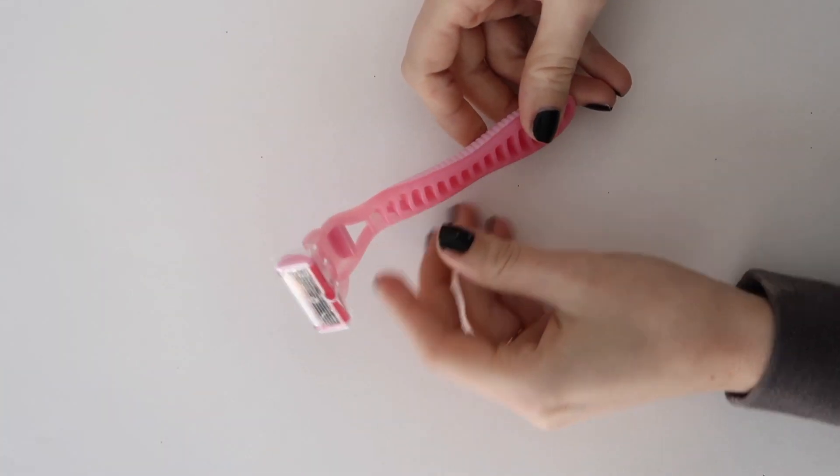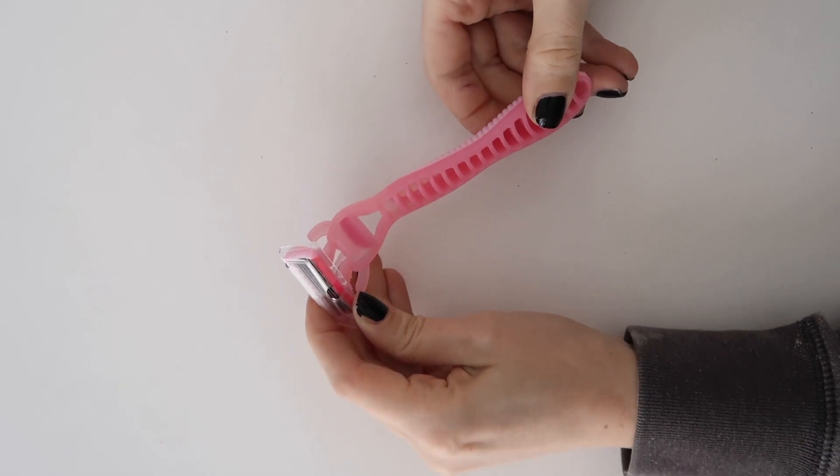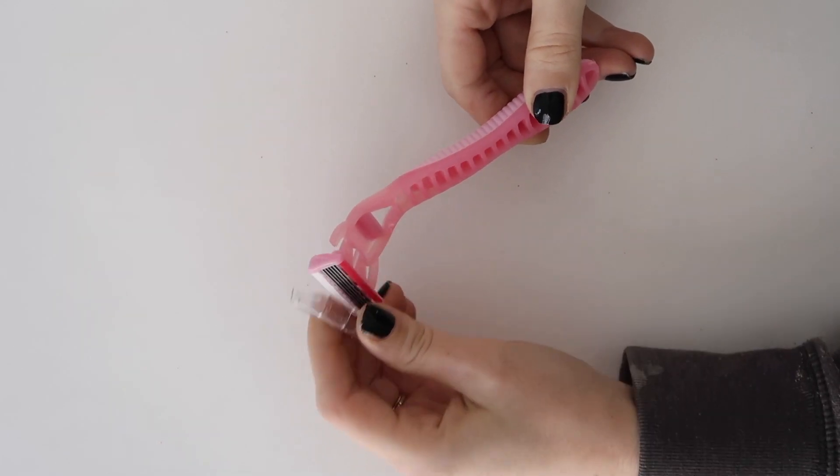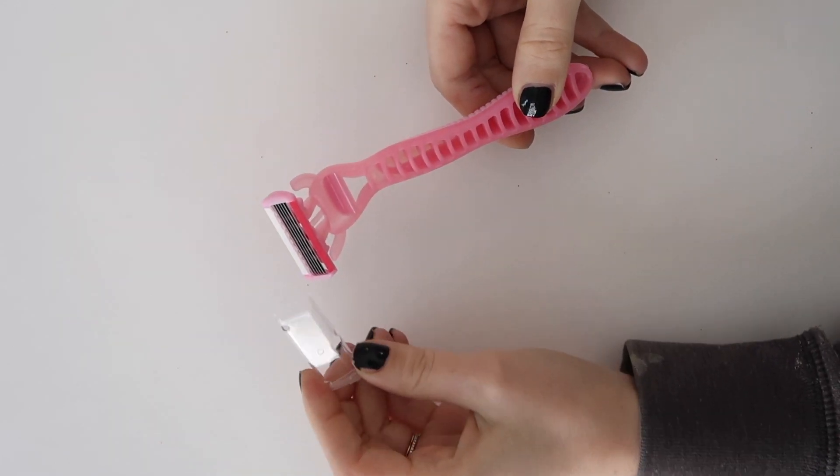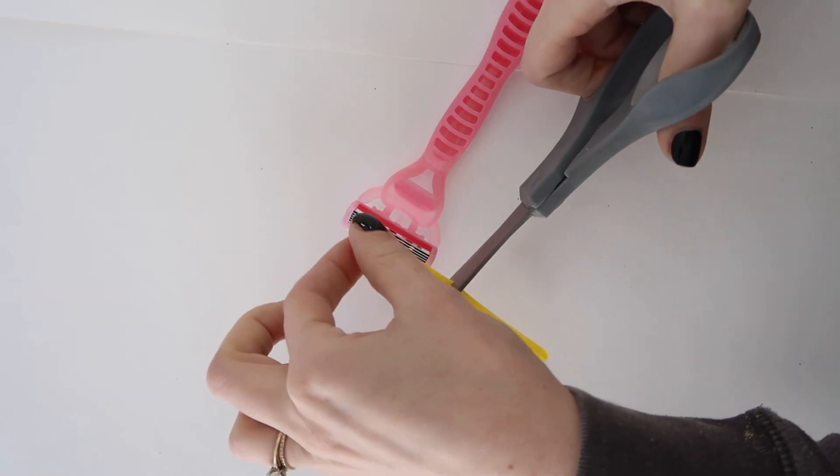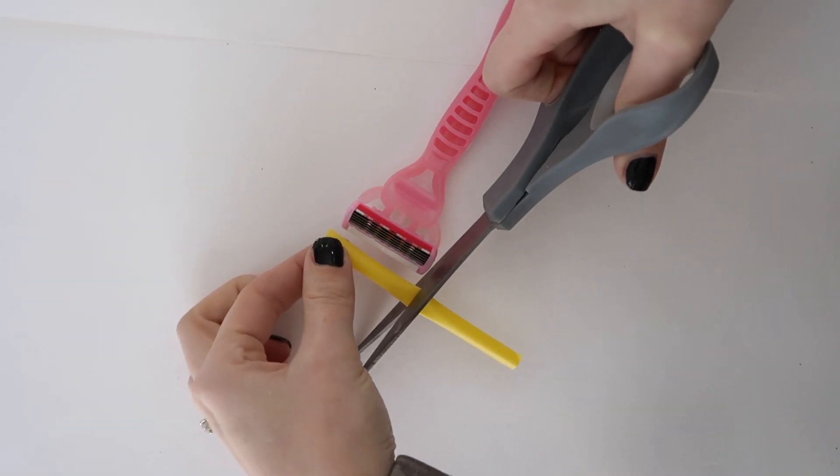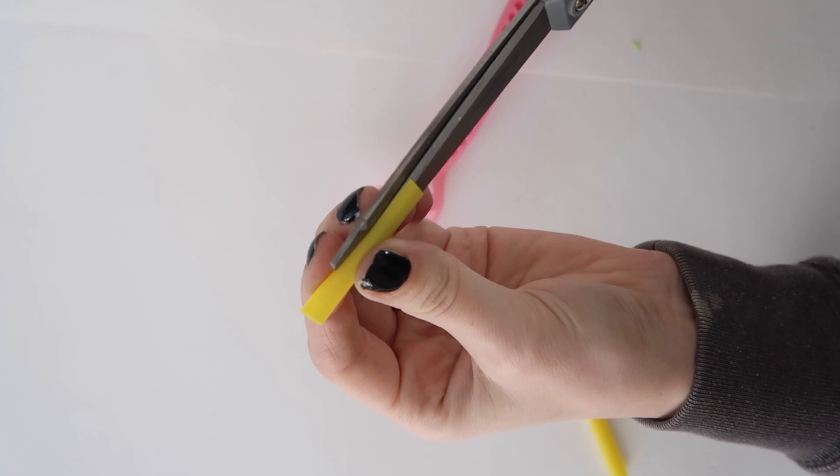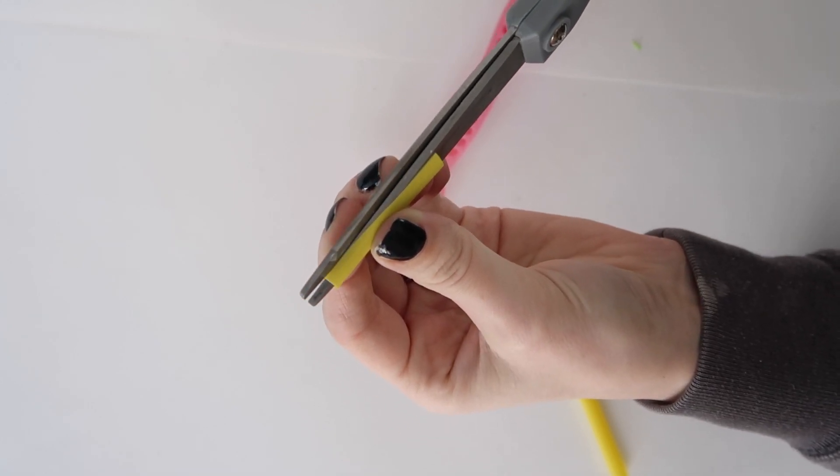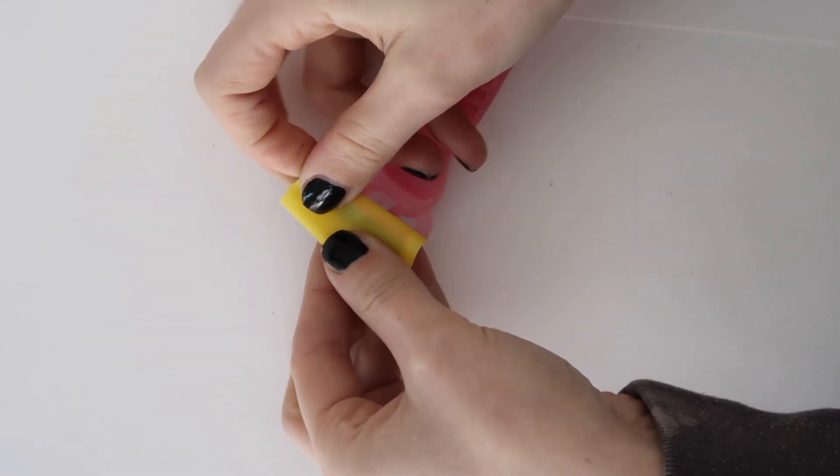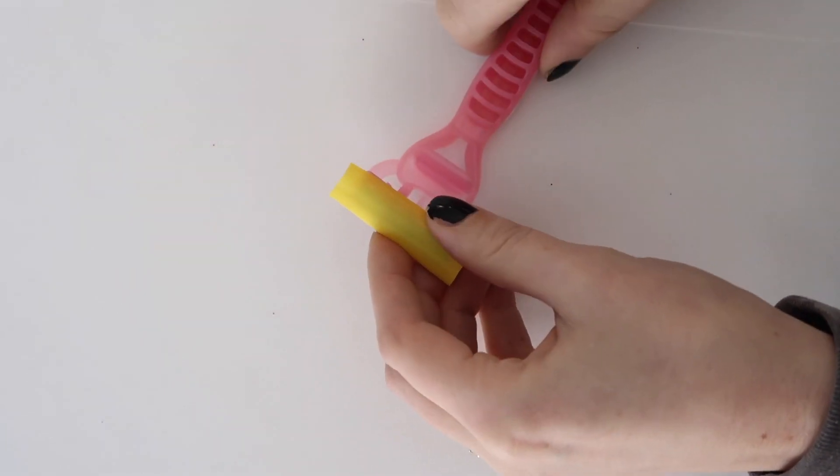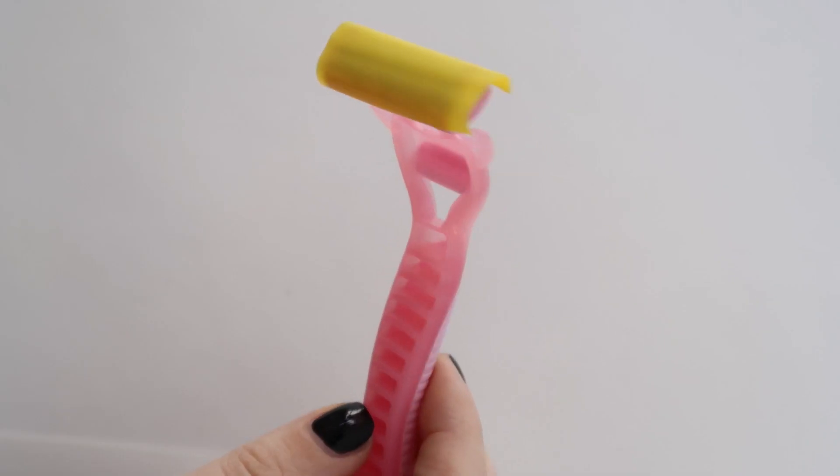Another great travel hack for straws is to cover up your razors. I don't know about you, but when I get my disposable razors, they come with the little protectors, but I lose those in about two seconds. So all you need to do is just cut a straw to the length of your razor, cut a slit up the center. And then you can put it over your razor to not only keep the razor nice and safe, but you don't have to worry about it slicing anything inside of your carry-on.